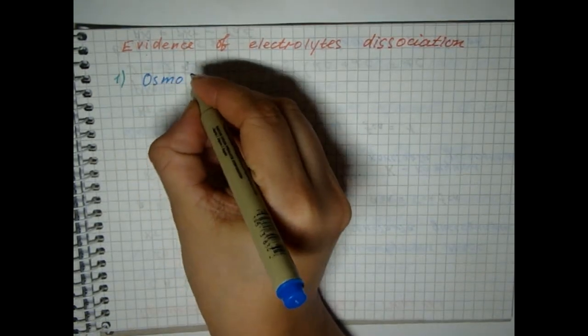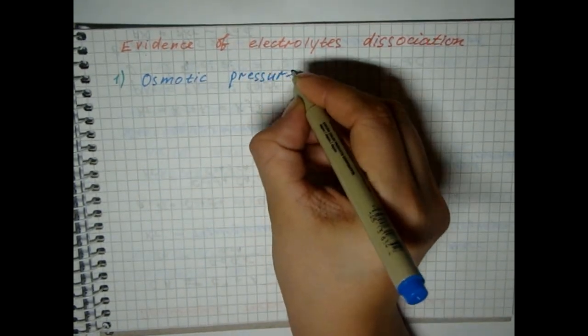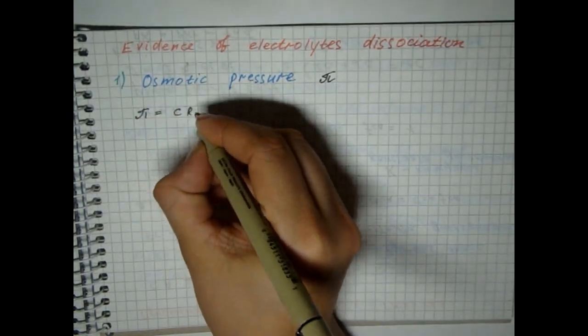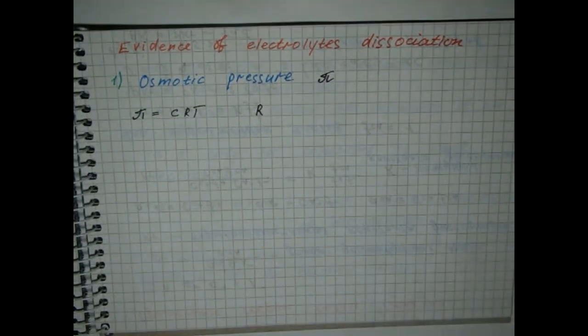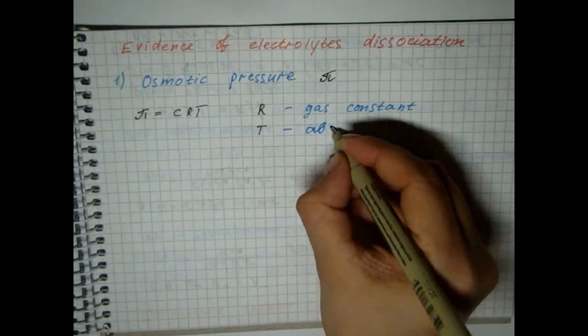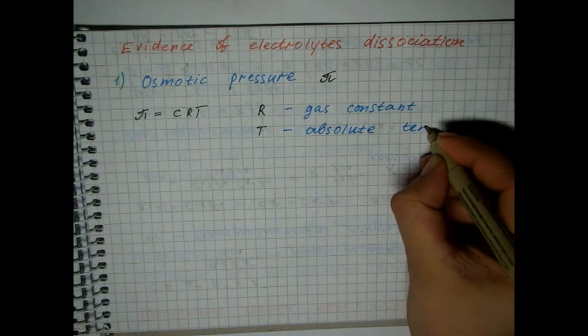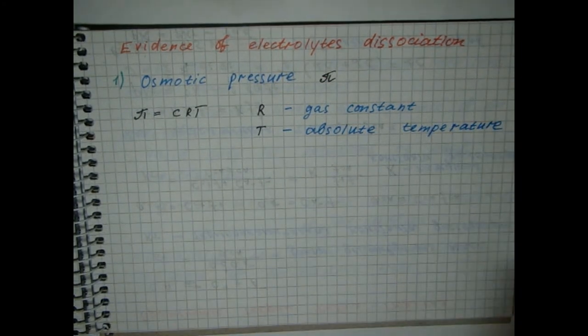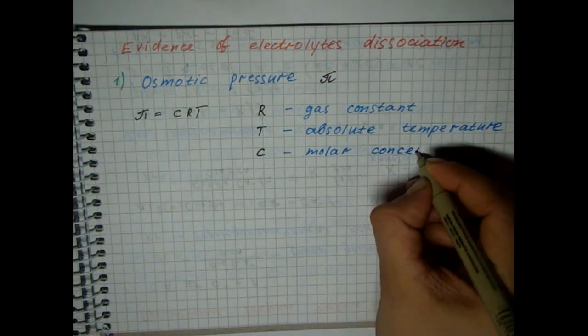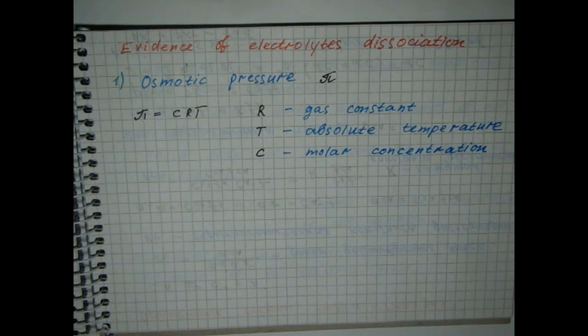Osmotic pressure. In dilute solutions the osmotic pressure is associated with molar concentration. For non-electrolytes, for example, for a solution of sugar in water, this equation is in good agreement with experimental data. But for electrolyte solutions, the experimental results were significantly larger than the calculated value.